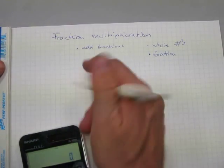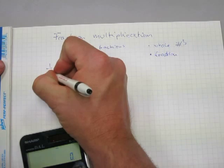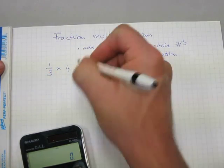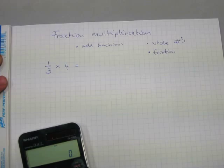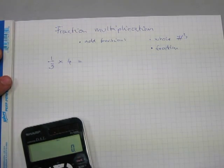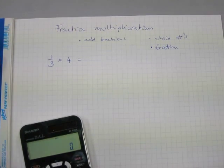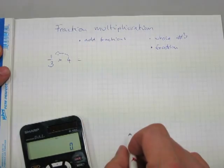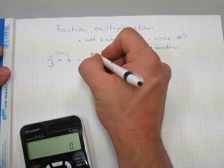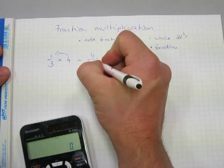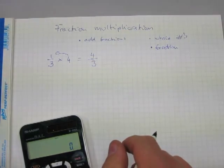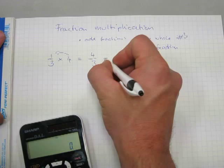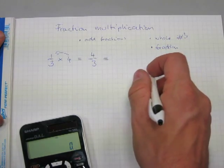Let's start with a fraction multiplied by a whole number. For example, what's one-third multiplied by four? There are a couple of ways to go about it. The fastest way: you multiply the whole number with the top of the fraction, so the answer is four-thirds. That's an improper fraction.